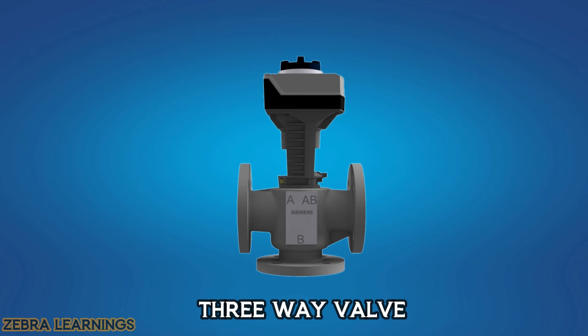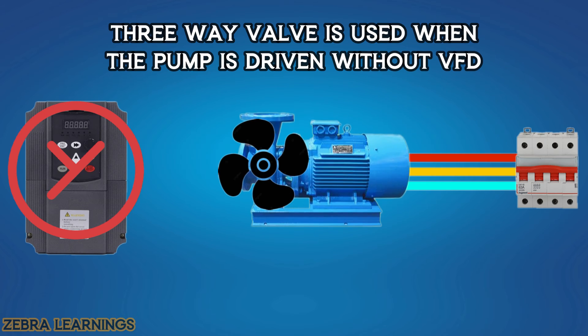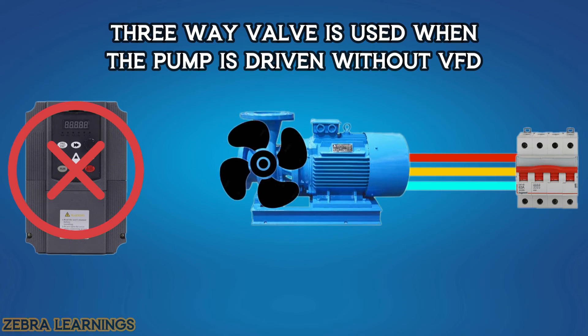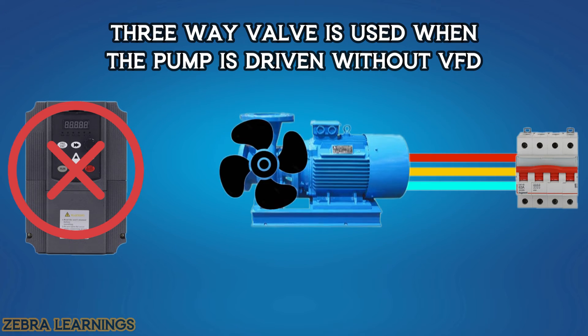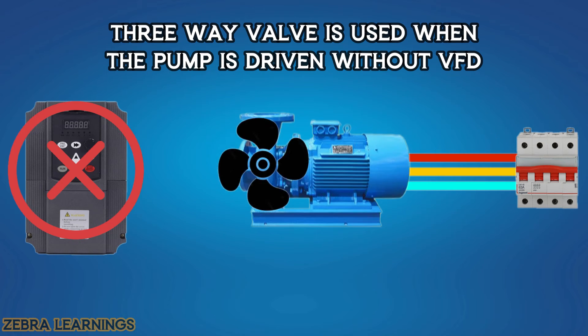Now let's install the 3-way valve in the AHU. First, let us see in which condition the 3-way valve is used. If the pumps are directly driven by electricity without the use of a VFD, then the 3-way valve is used.